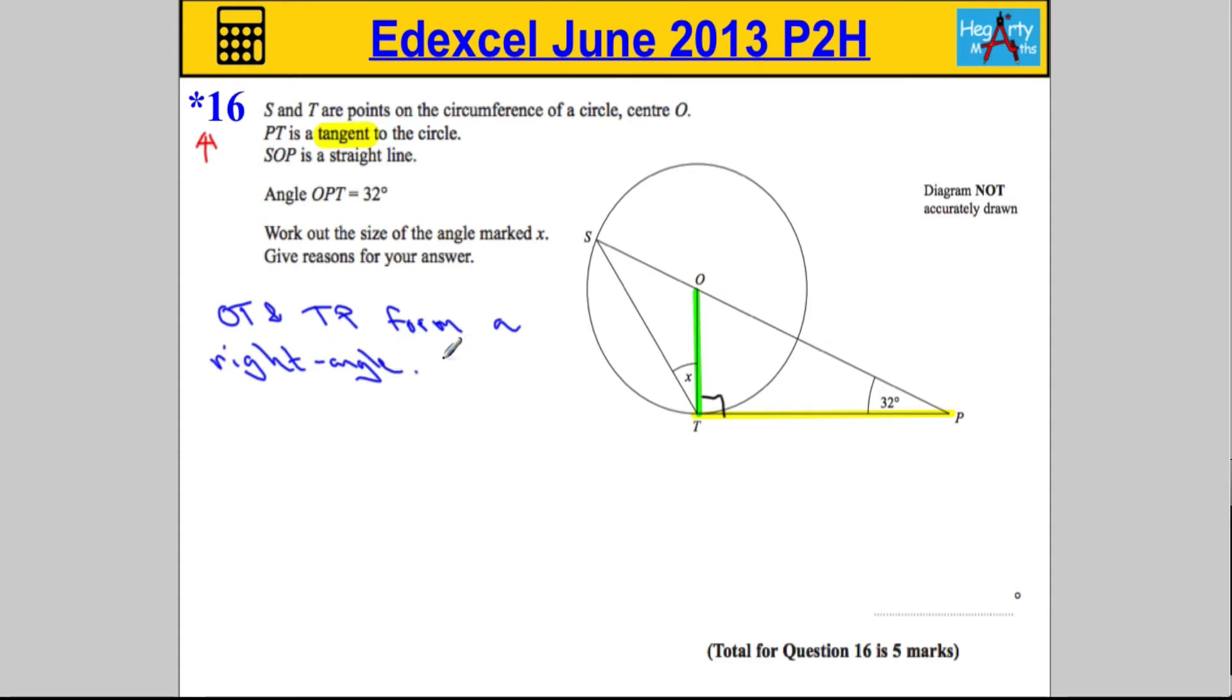The reason is the tangent and the radius form a right angle. So that's the first piece of information and that's our first mark.